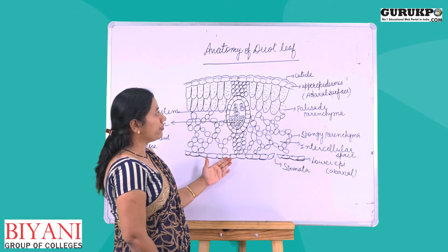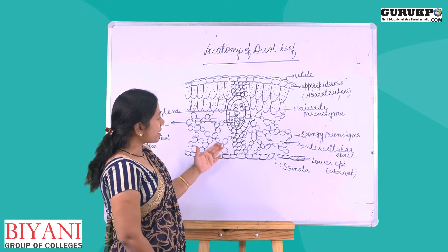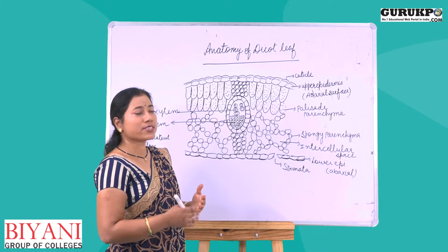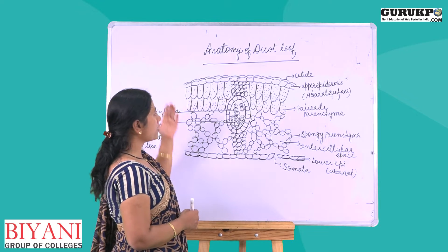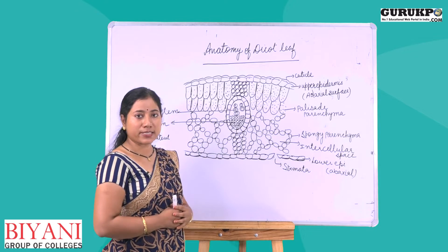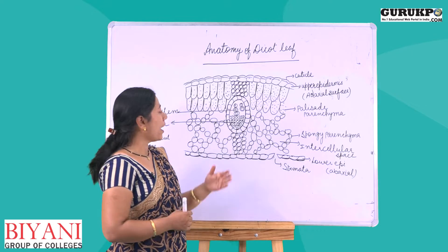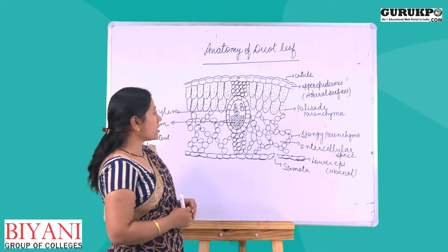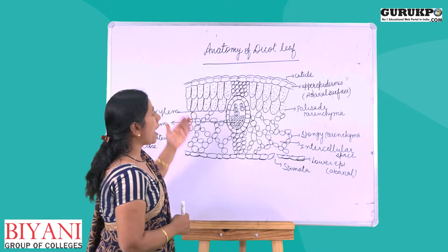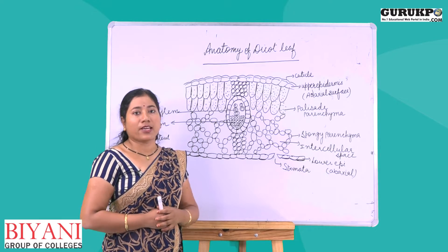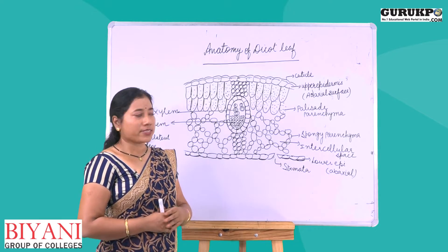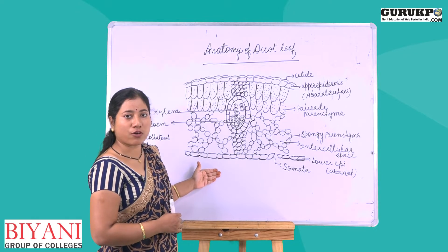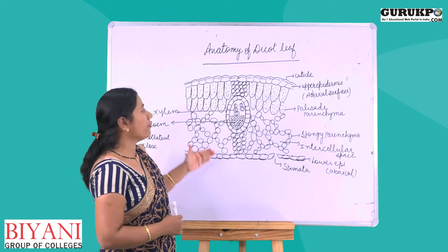You can see the structure of a dicot leaf. This dicot leaf shows three main parts: first is epidermis, second is mesophyll, and third is vascular bundle. Now first we talk about epidermis. Epidermis covers both the upper and lower surface of the leaf.